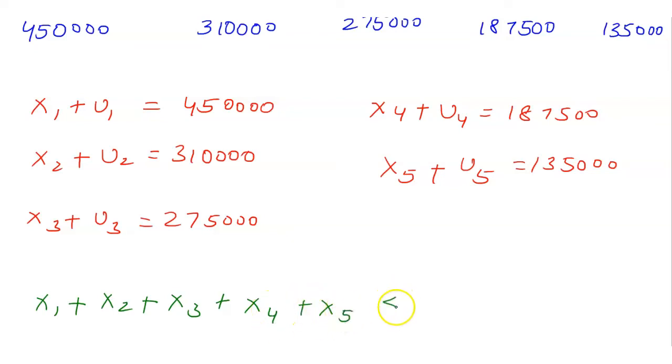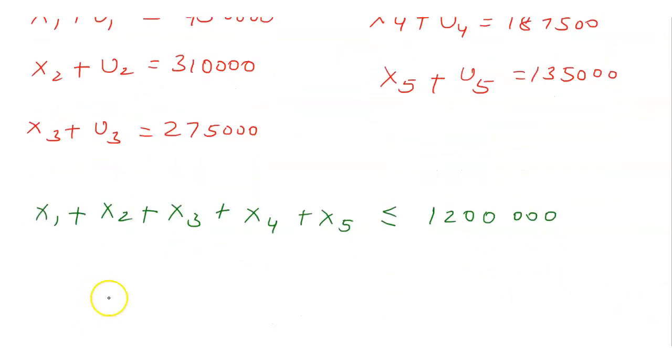So x1 is greater than or equal to 70% of 450,000, which is 315,000.